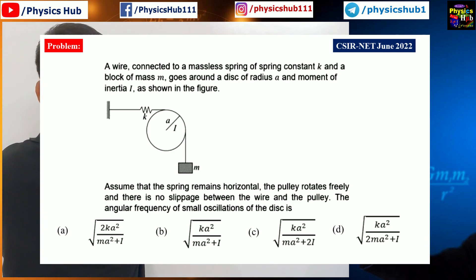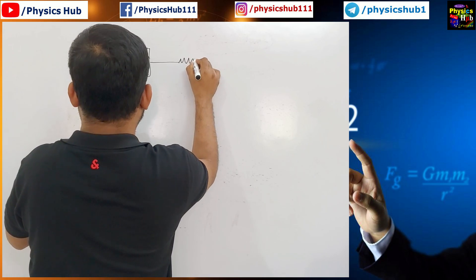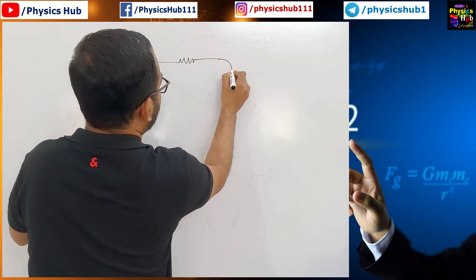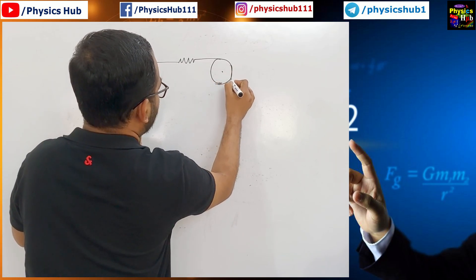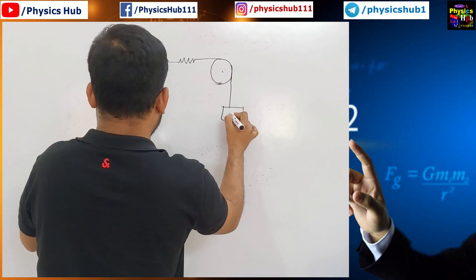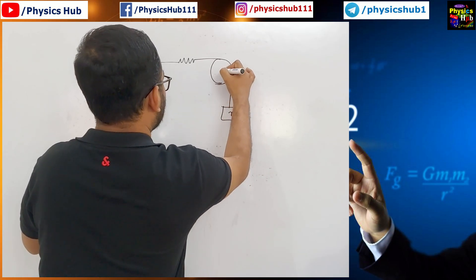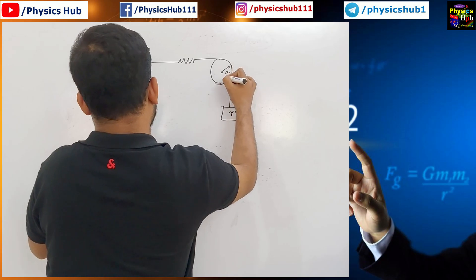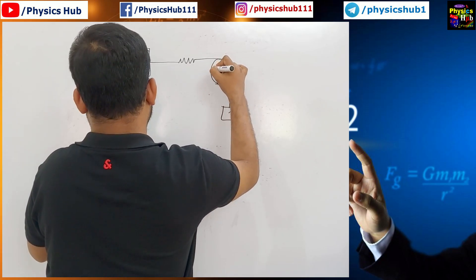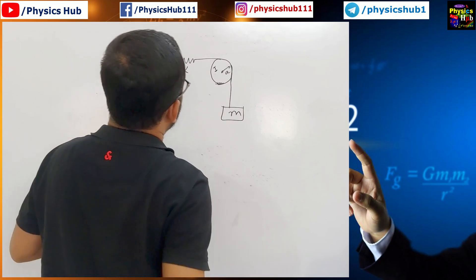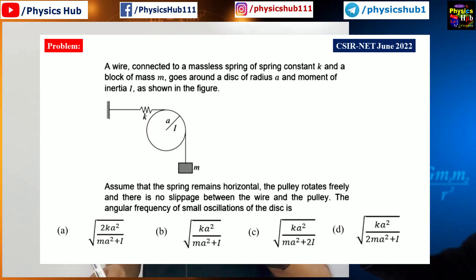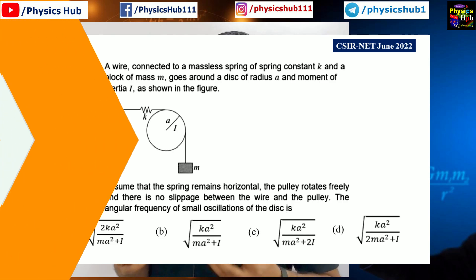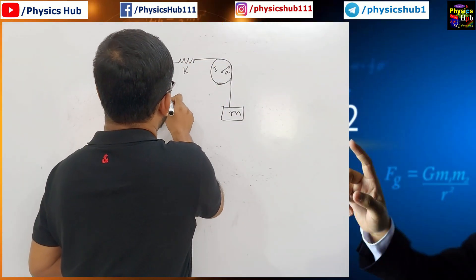So, you have been given a rigid support. A spring is connected like this and here we have a pulley which can rotate freely and at the end of this string a mass M is connected. Radius of this pulley is A and the moment of inertia of this pulley is I. The spring constant is given to be K. Assume that the spring remains horizontal, the pulley rotates freely and there is no slippage between the wire and the pulley. The angular frequency of small oscillation of the disk is angular frequency omega you have to find out.